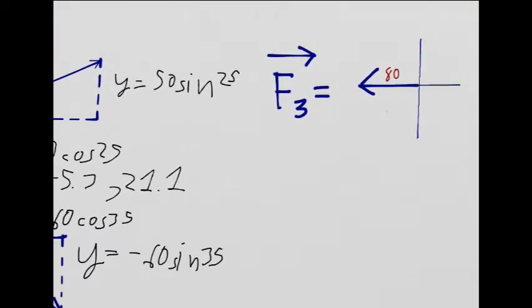Here, there's no triangle, it's just a line going to the left. So X is negative 80.0 and Y is nothing.